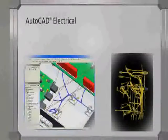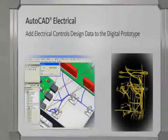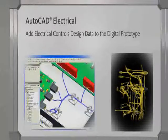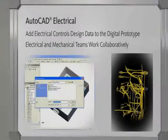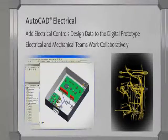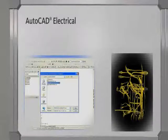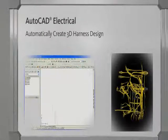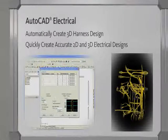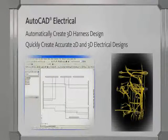Electrical design information for cables and conductors is sent to Autodesk Inventor software to automatically populate a 3D wire harness. Inventor users can pass wire connectivity information to AutoCAD Electrical to generate the corresponding 2D schematics. This smooth bi-directional communication between AutoCAD Electrical and Inventor helps users quickly create accurate 2D and 3D electrical designs and build a more complete digital prototype.